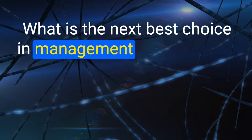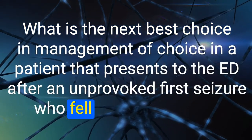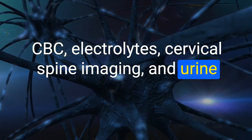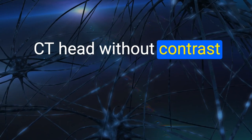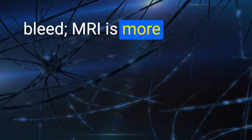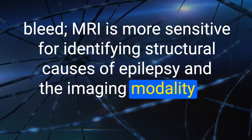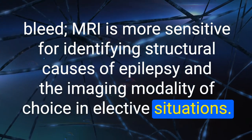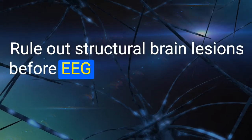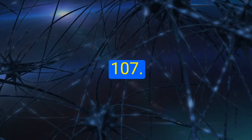106. What is the next best step for a patient presenting to the ED after a first unprovoked seizure who fell on the sidewalk, with normal CBC, electrolytes, cervical spine imaging, and urine toxicology? CT head without contrast — must rule out acute neurologic problems (e.g., bleed). MRI is more sensitive for identifying structural causes of epilepsy but is the imaging modality of choice in elective situations.